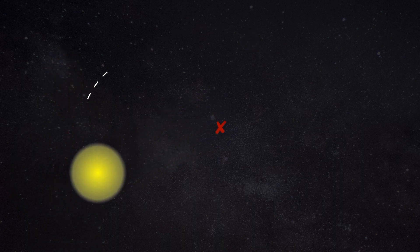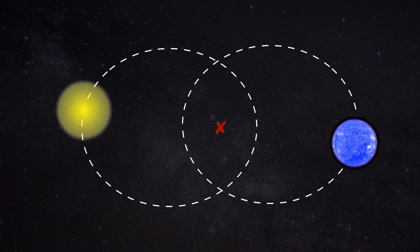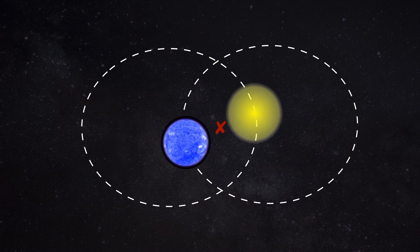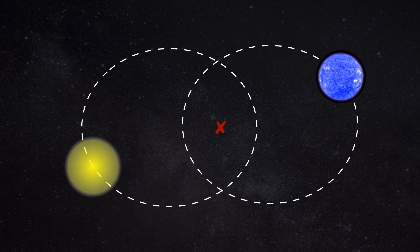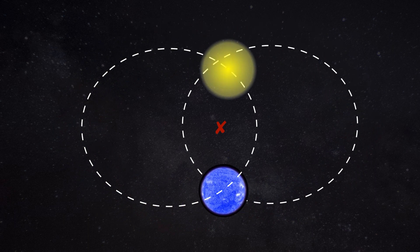But if the two objects are more similar in mass and weight then they will have an orbit around a point close to the center of the two objects and this is known as the barycenter.